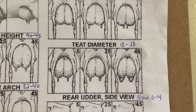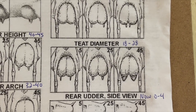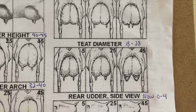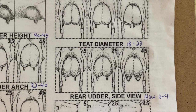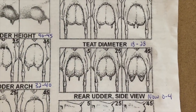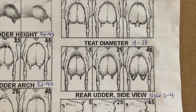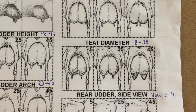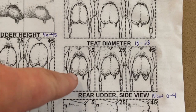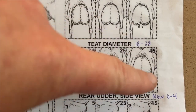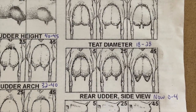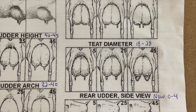For teat diameter, personal preference comes into play here. If you have hand or muscle issues like arthritis, you might want bigger, more milkable teats in your herd. But ideally, we're shooting for about 18 to 28 — not something as small as the lowest score, but not huge either. We're looking for something with a decent width, not too big and not too small.